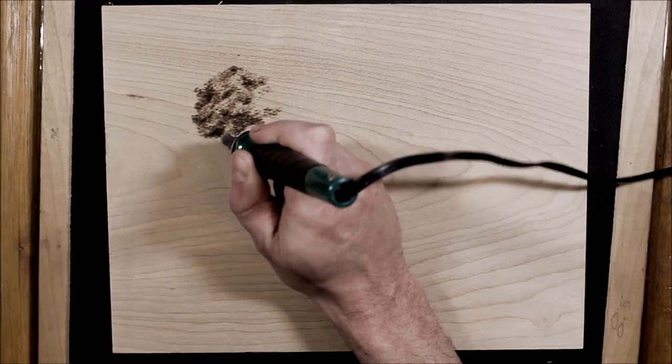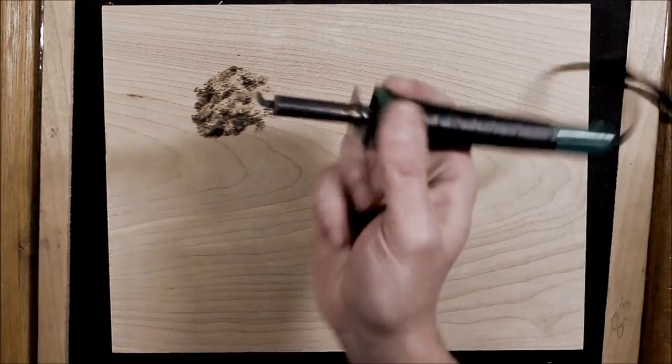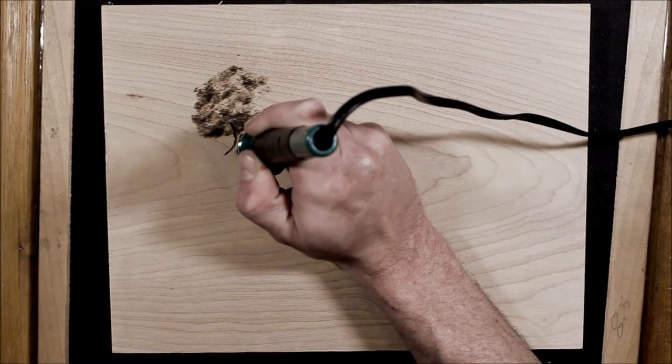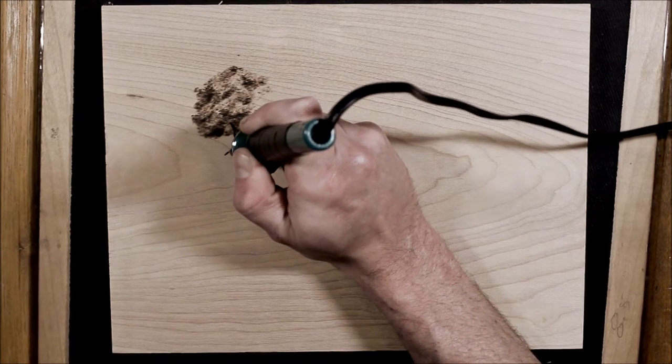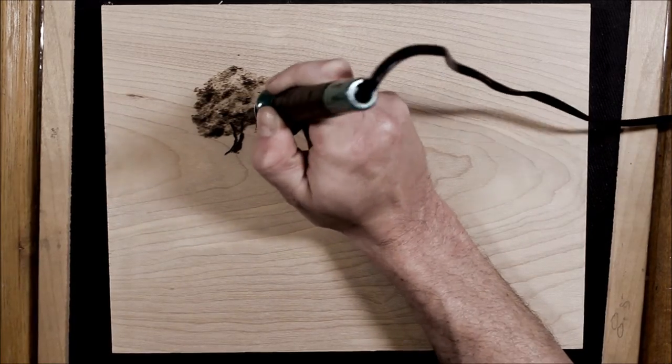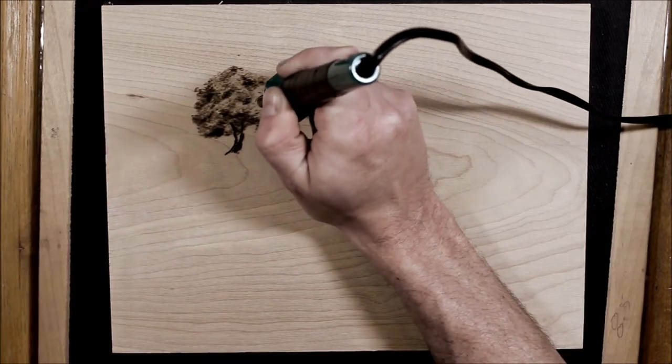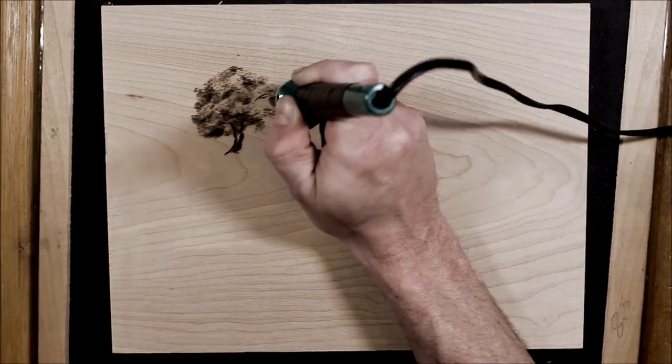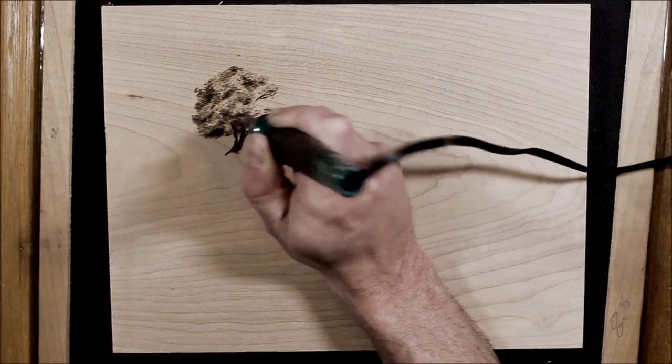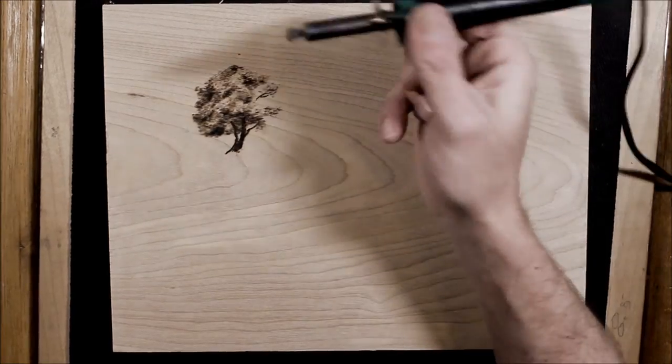It was frustrating at first. The main thing you'll notice when you first are wood burning is you get divots, you get marks at the end of your stroke. The key if you don't want to damage the wood is just to keep the pen moving fast.